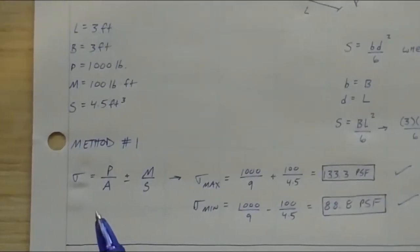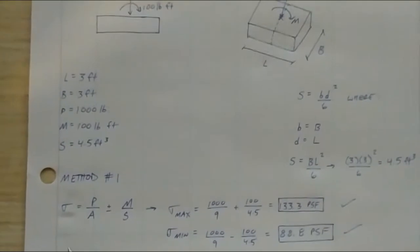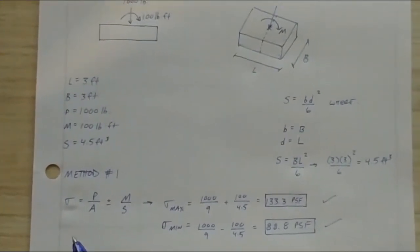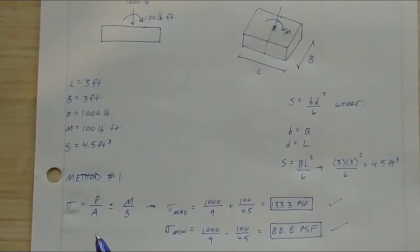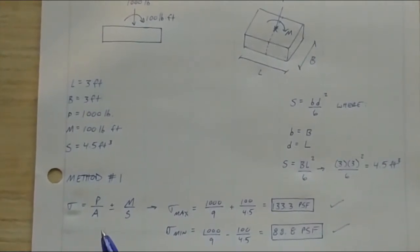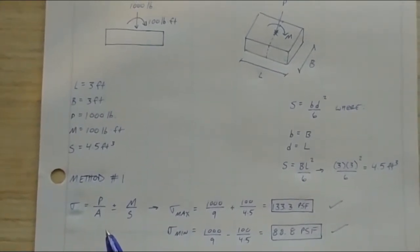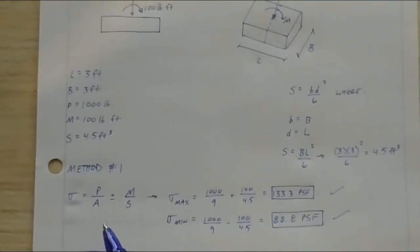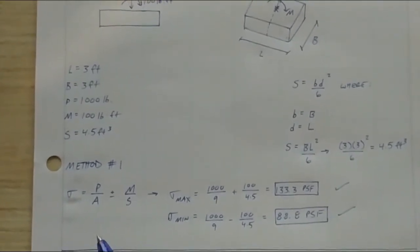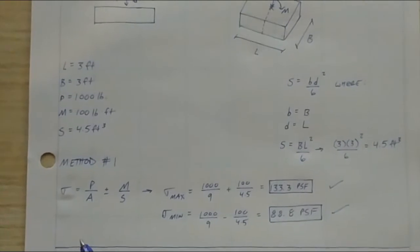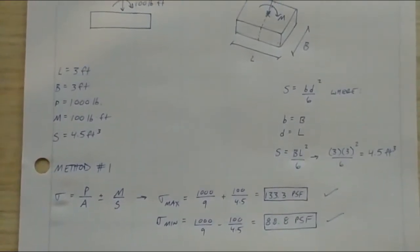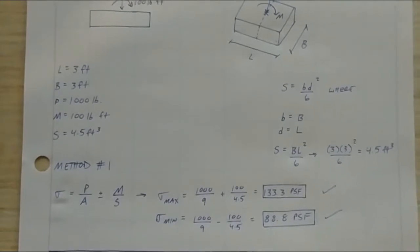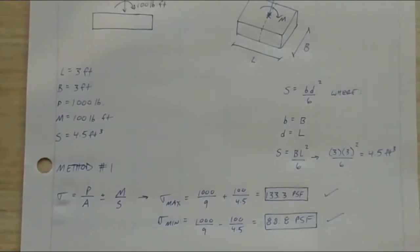We know that B and L are both three feet. So three times three squared over six gets you 4.5. That's cubic feet, because you have feet here squared, and you have feet here. So let's remember those units as we go through this. So we have L, B, static downward force, P of a thousand pounds, and a moment applied of a hundred pound feet. And then we have a section modulus of 4.5 cubic feet.